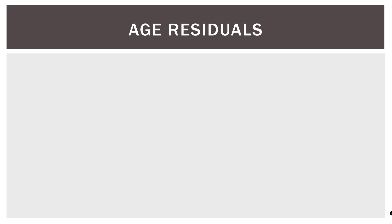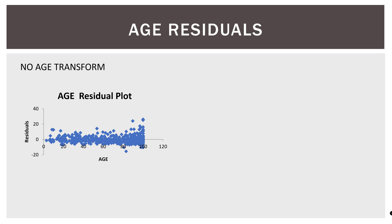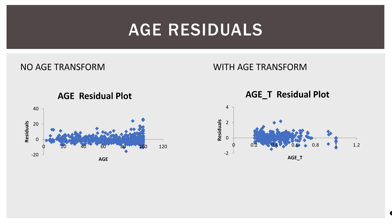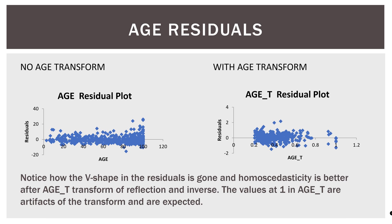Here are the age of the home residuals. With no age transform, this is the residual plot. Here is the age_T residual plot with the age transform applied. Notice how the V shape in the residuals is gone, and homoscedasticity is better after the age_T transform of reflection and inverse. I reflected the variable — you can see on the left that this is a left-tailed skewness, so I flipped it and then took the inverse. You'll also notice there are some values right at one in age_T; that is an artifact of the transform and is expected. It doesn't cause any problems — it is just a natural output of doing the transform. But you see the difference in the residuals. That's exactly what we want to accomplish by doing transforms.